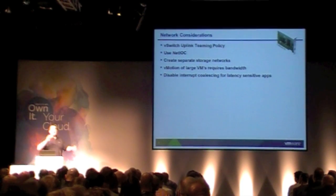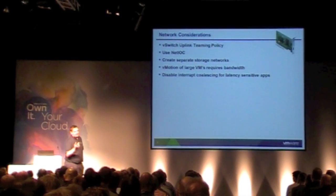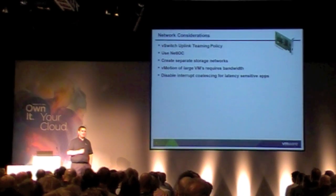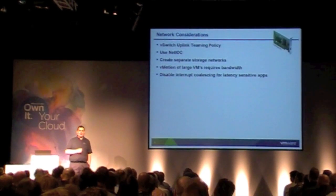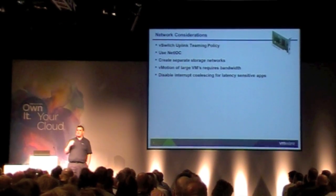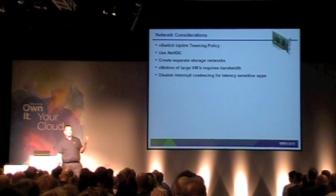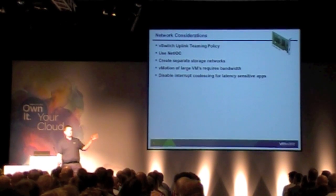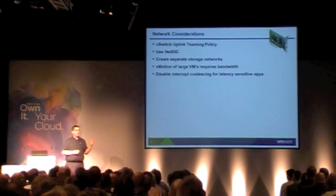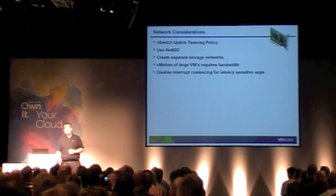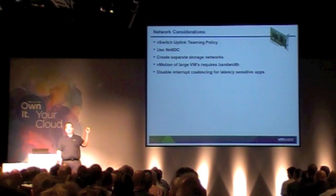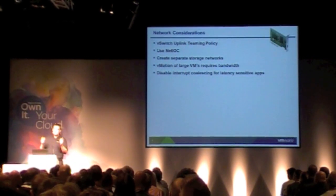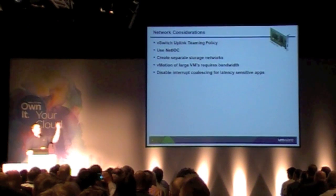Everybody loves vMotion — but as we build these monster VMs, let's do the math. Take a one-terabyte VM and vMotion it across a one-gig link — that's a long time. As we build larger VMs we need more bandwidth, so monster VMs need 10GbE infrastructure. The trade-off with 10GbE is latency: packets may not arrive as quickly, so if you have latency-sensitive applications like VoIP or financial trading where microseconds count, you might want to disable interrupt coalescing.